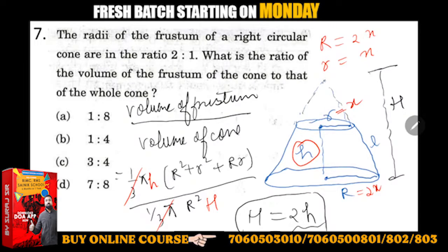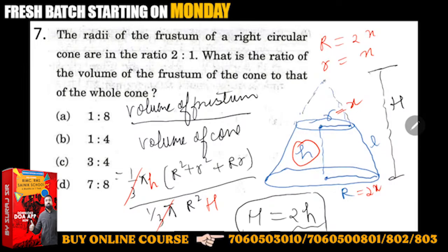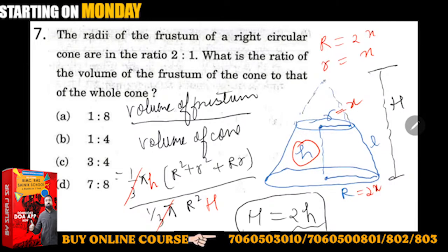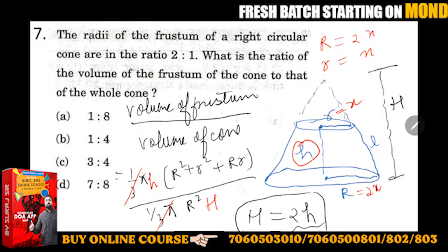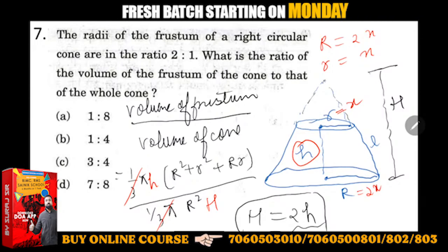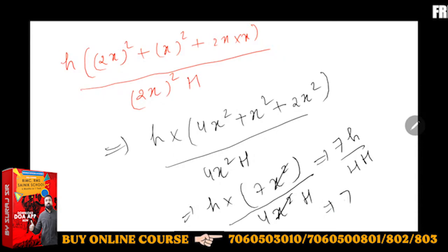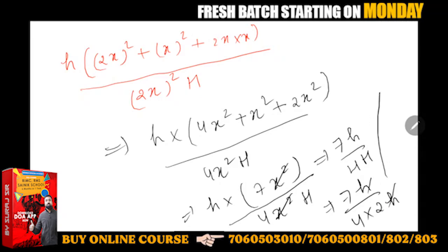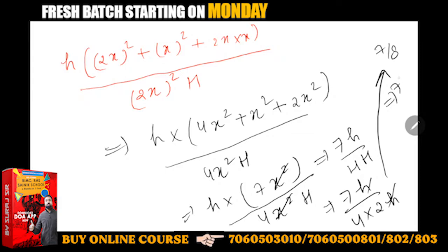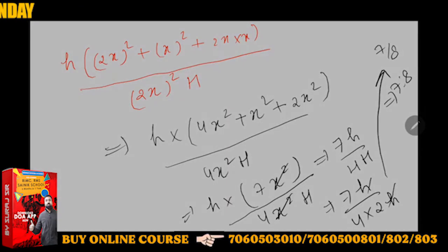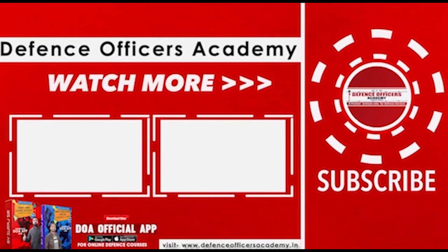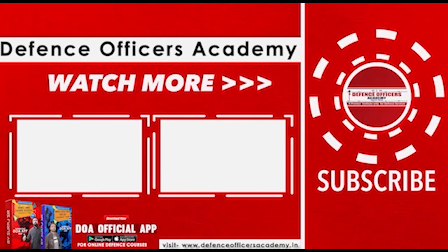The full height of the cone will be double the frustum height because the radius is in ratio 2:1. Since the frustum is made from the cone, capital H will be twice h. If you put the value, this becomes 7h upon 4(2h) = 7h upon 8h. H cancels, giving 7/8. So the answer is 7:8.